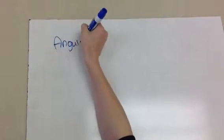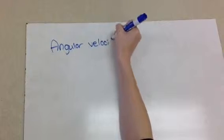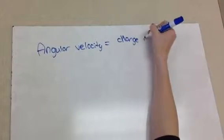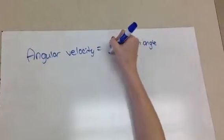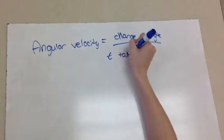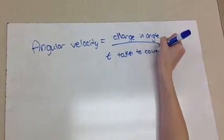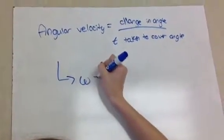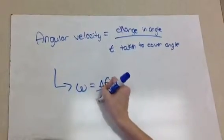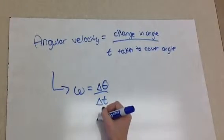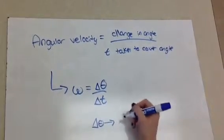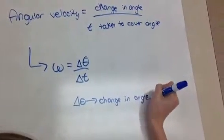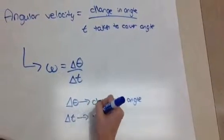Angular velocity is the change in angle over the time taken to cover the angle. W, known as omega, is used to represent angular velocity. The variables for angular velocity are theta, which equals the change in angle, and t, which equals the time taken to cover the angle.